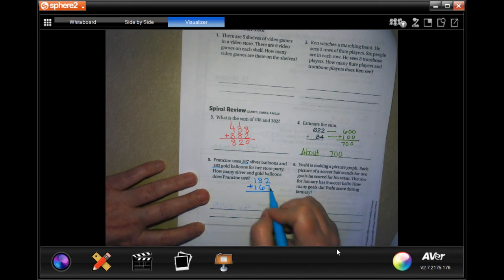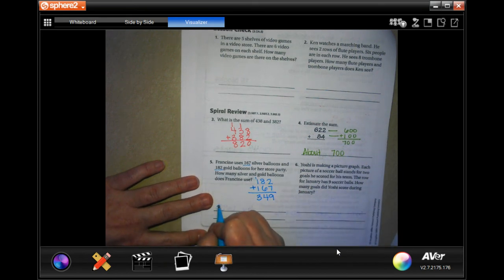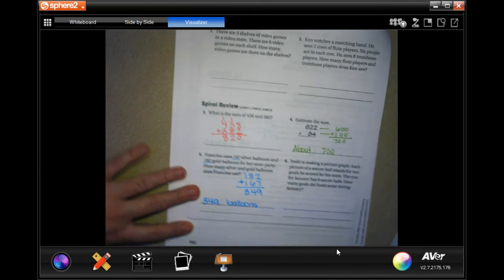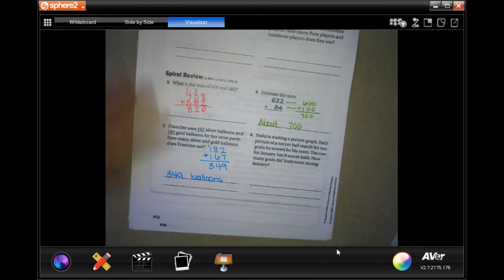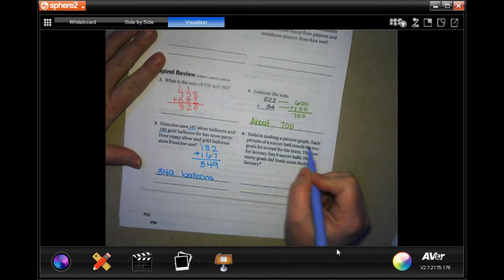Let's do it. Two plus seven is nine. Eight plus six is 14. Carry the one. One plus one plus one is three. So, 349 balloons.